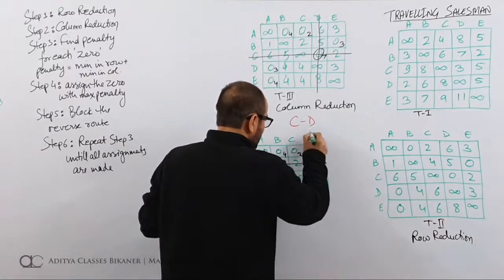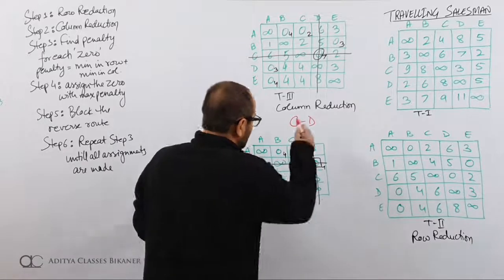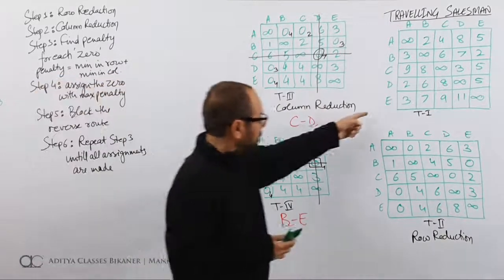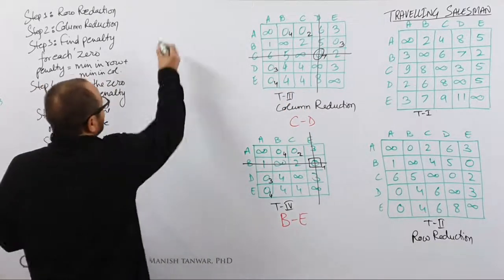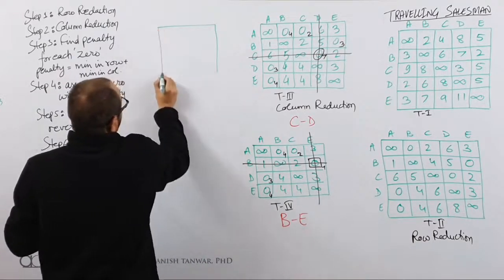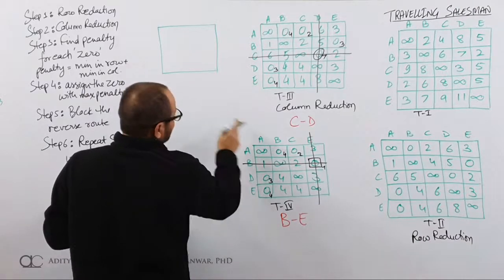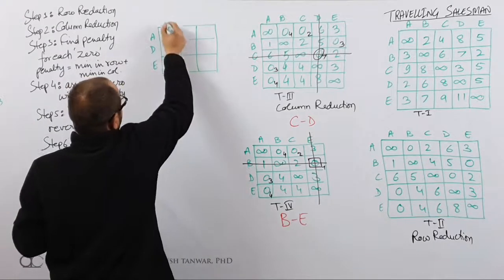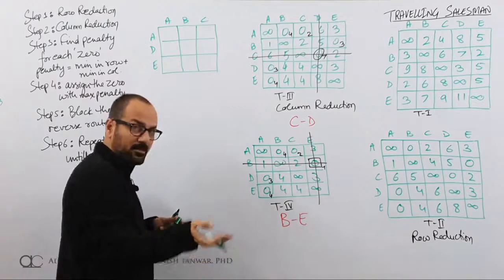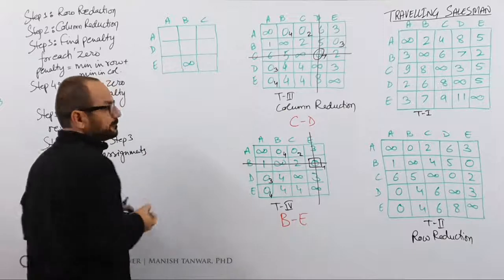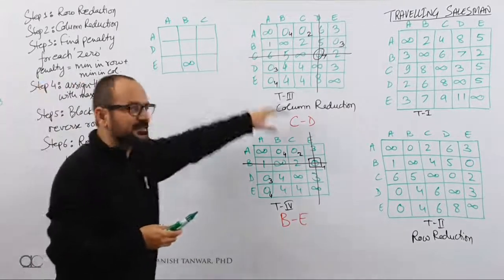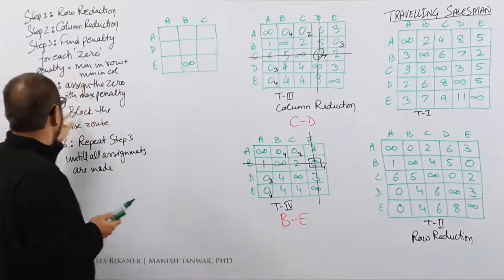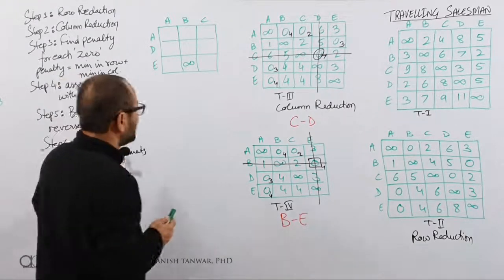The maximum penalty is 4 and there are three zeros with that penalty. We can assign any of these — let us take the one corresponding to B to E. B is removed, E is removed. Block the reverse route E to B. If E to B still exists in the reduced matrix, block it. It might get reduced naturally, but if it still exists we block it.